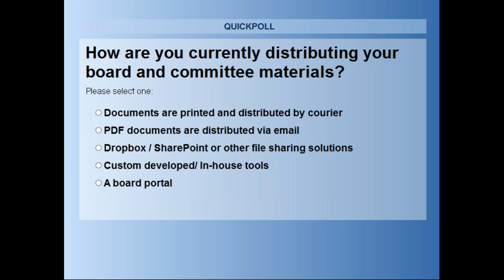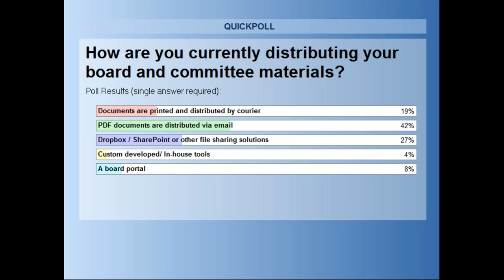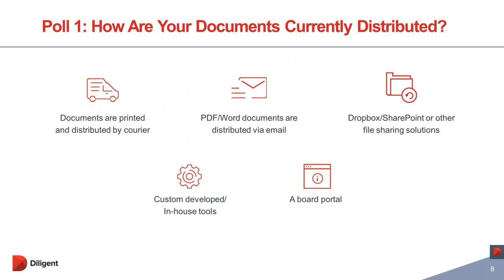We are just waiting a few seconds before closing the poll and displaying the results. I can see that the majority of you are currently using PDF sent via email. The second most common is Dropbox or SharePoint, and then printing and delivering by courier. Some of you are using a board portal. The result is pretty much aligned with our previous surveys.